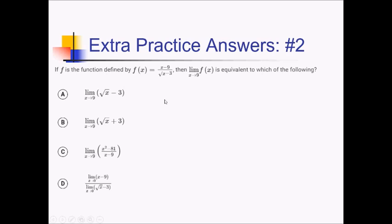For this problem, they're defining our function as x minus 9 over radical x minus 3. They want to know what the limit as x approaches 9 of f of x is equivalent to. If you plug in a 9 right away, you get 0 over square root of 9 minus 3, so 0 over 0, which of course is no good.